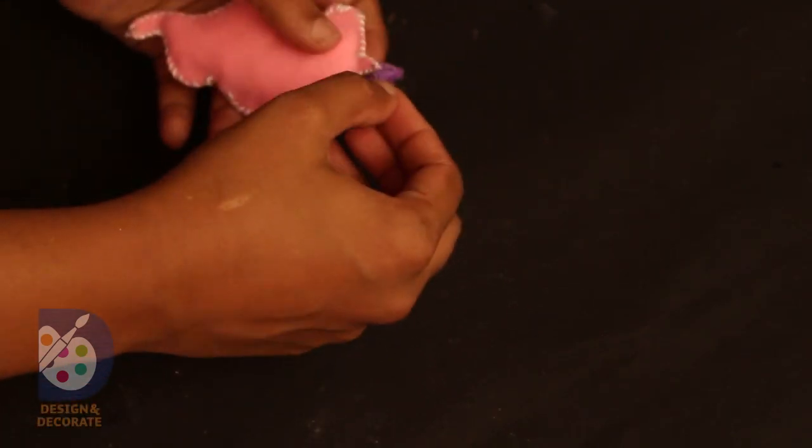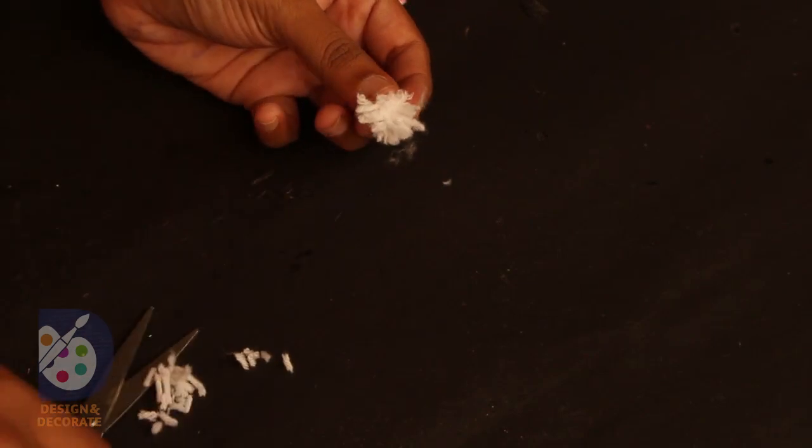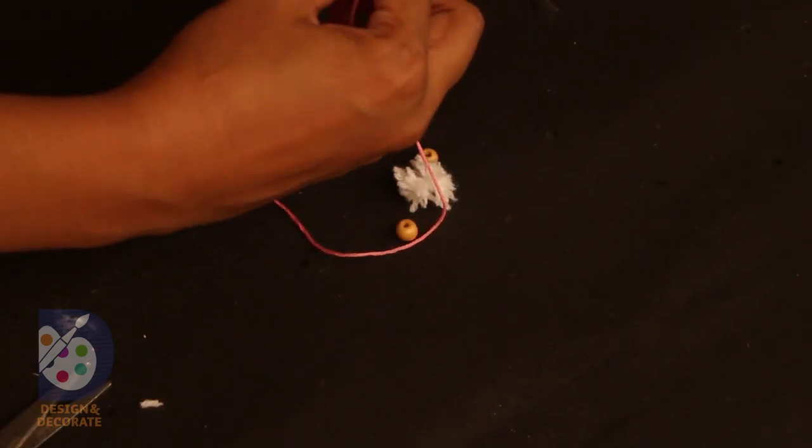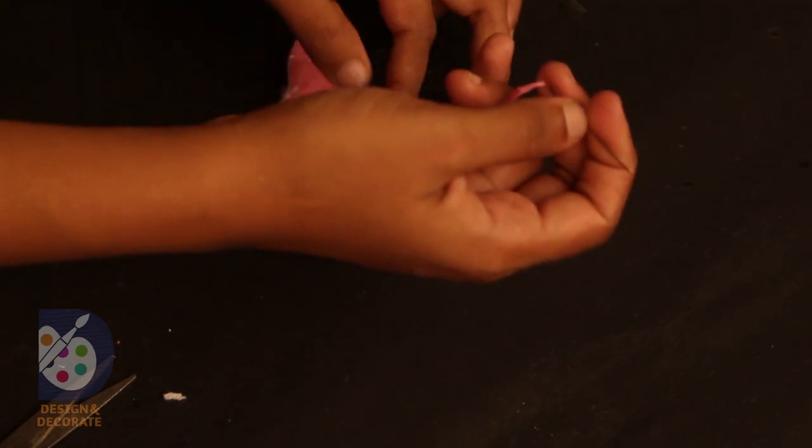It's done. Now paste a small heart shape into the tail using fabric glue. Next, make a small pom pom ball using woolen thread and keep it aside. Now take pink embroidery thread on the needle and close the space that we made to fill the cotton.